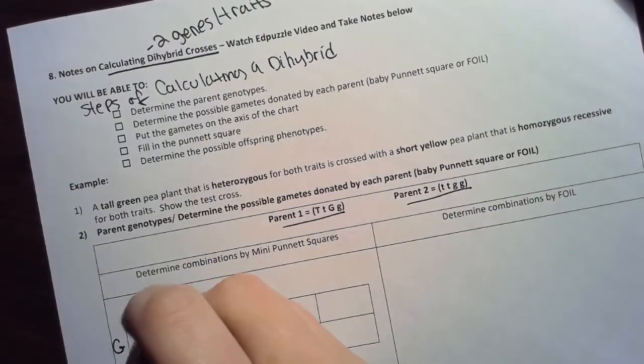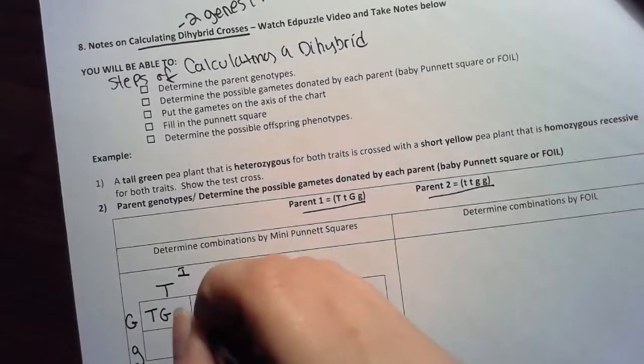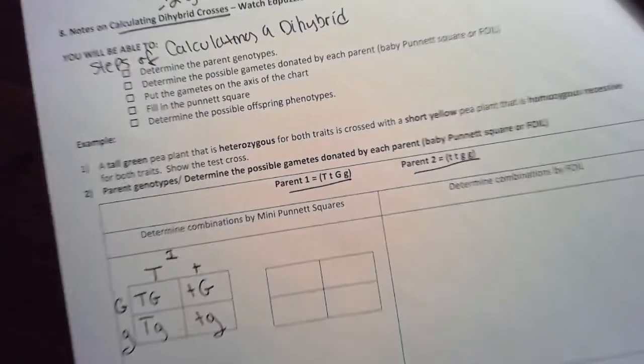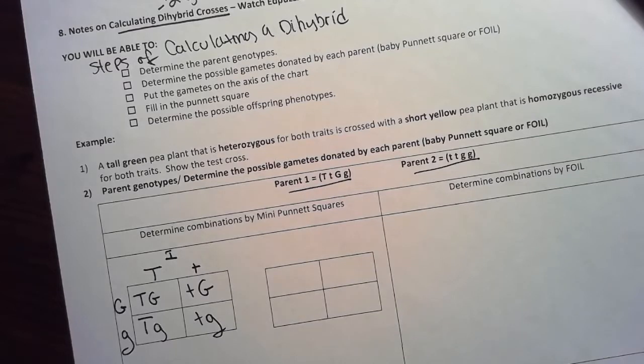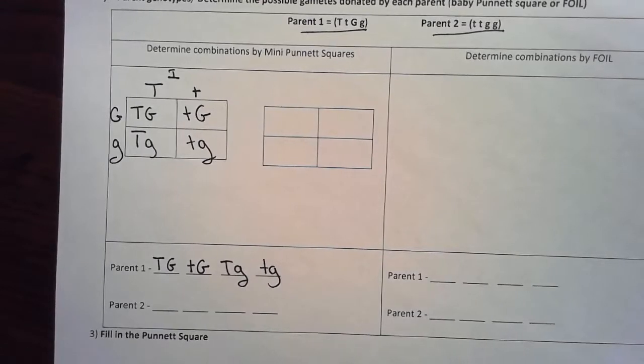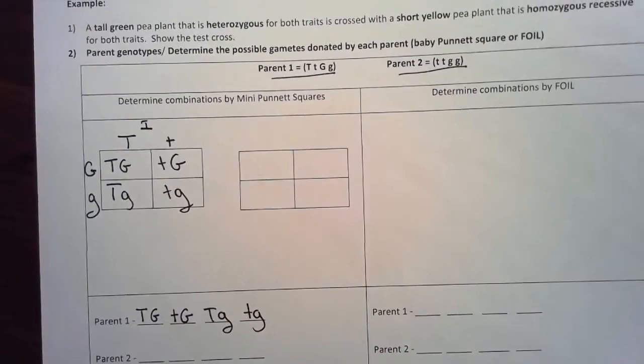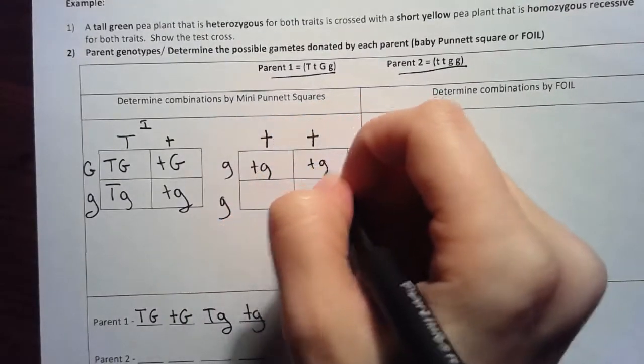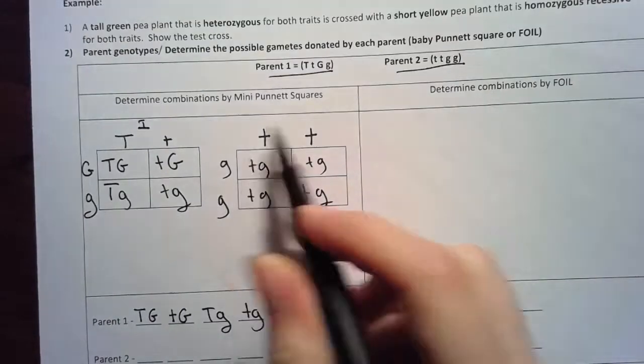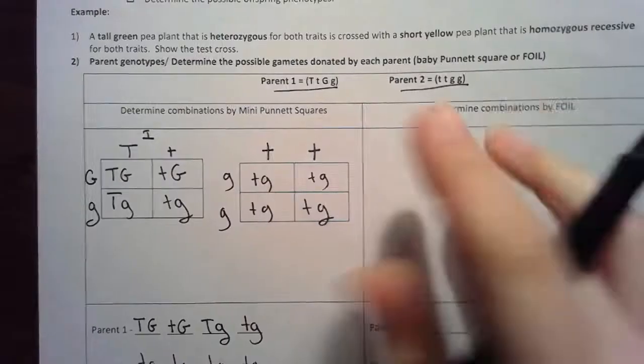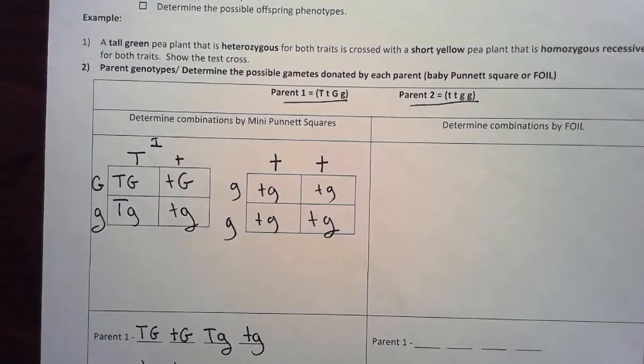This is going to be parent one, and then I just complete it like a multiplication table. Parent one I have four possible combinations and these are actually gametes. This is what would end up in like each little gamete, so either an egg or sperm depending if you're male or female. For parent two, I'm going to put one gene on the top, one gene on the side, and complete like a little multiplication table. Each of my four possible gametes is going to be the same thing in this case. That was one method. If you like this method, go with it.